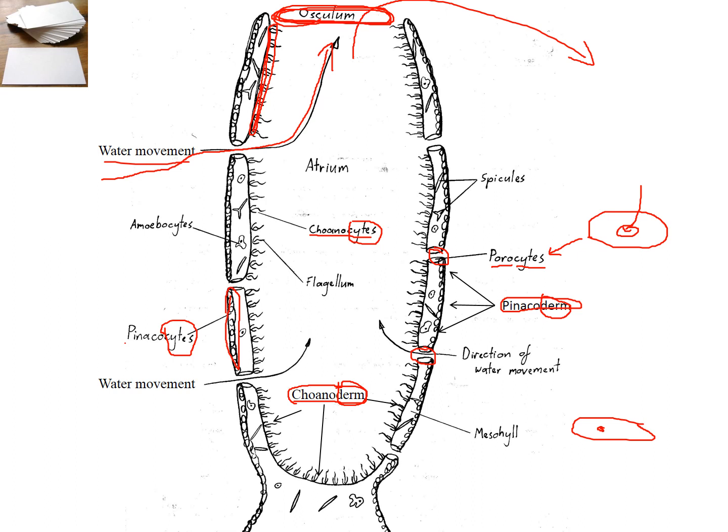So what are the choanocytes? They're also known as collar cells. We'll look at them a little more closely. They have a flagellum. And they have cilia. And the cilia filter out food, whereas the flagellum wave around. They beat around. They're like little oars, little paddles from each of these cells, and they induce the water current. When they wave, they induce the water to come in through the porocytes and out through the osculum. So there's the flagellum, and the cilia here.